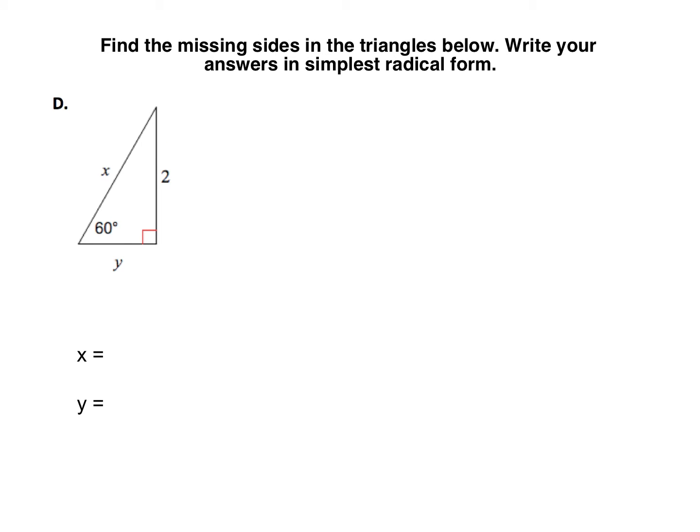In problem D, we are back to a 30-60-90 triangle. Remember that in a 30-60-90 triangle, everything is based off of the short leg, which is opposite the 30-degree angle. So here my 30-degree angle would be right here, and my short leg would be y. It gives me the length of the long leg, so I have to use my long leg to figure out what the short leg is equal to.